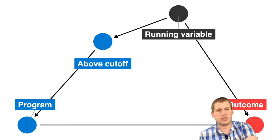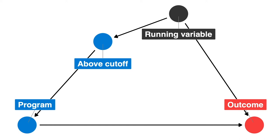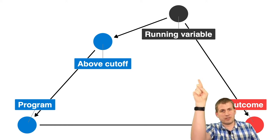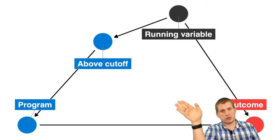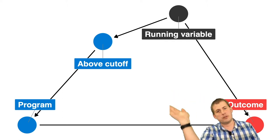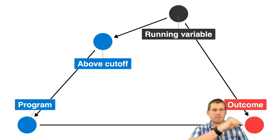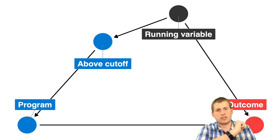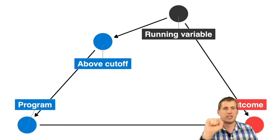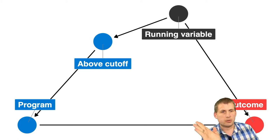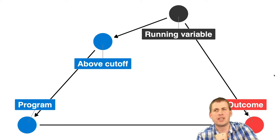In DAG language, this fits well with everything we've discussed this semester. You have a program that causes some outcome, but to access the program you have to be above the cutoff in the running variable. The running variable causes the program, but it's mediated by an 'above cutoff' node — you can't just be in the program with any value of the running variable. As long as we control for being above the cutoff in our DAG, we can find the causal effect of the program on the outcome.